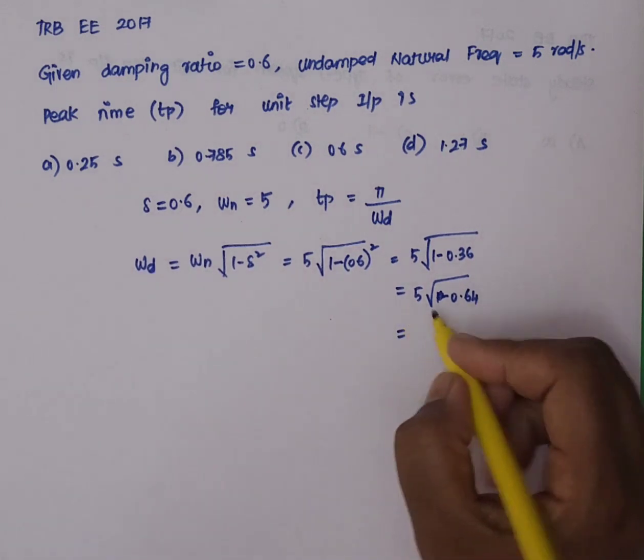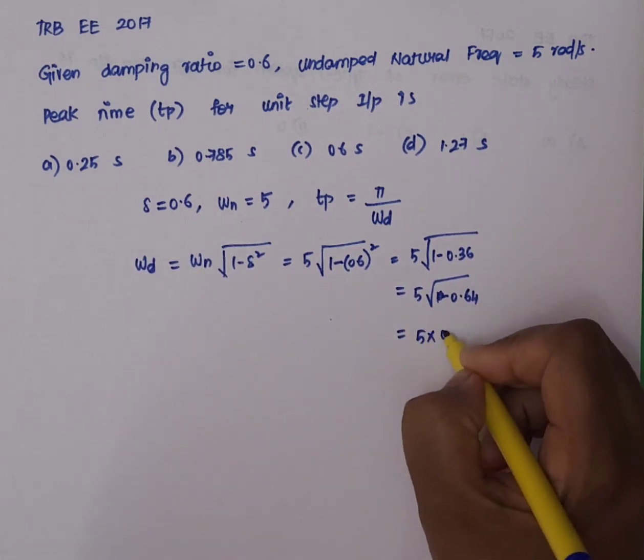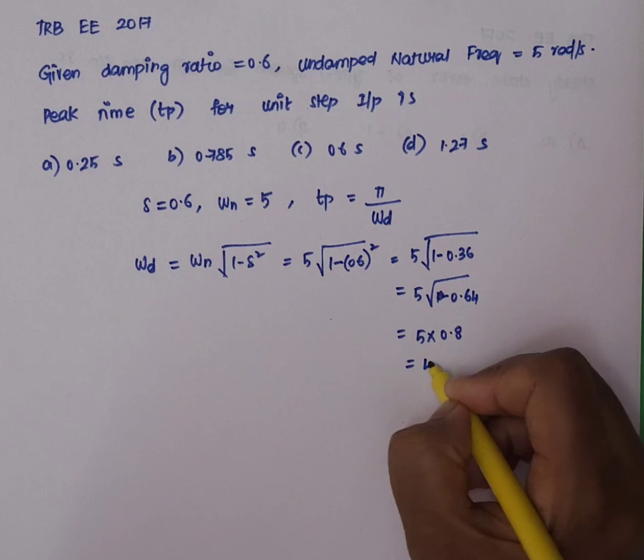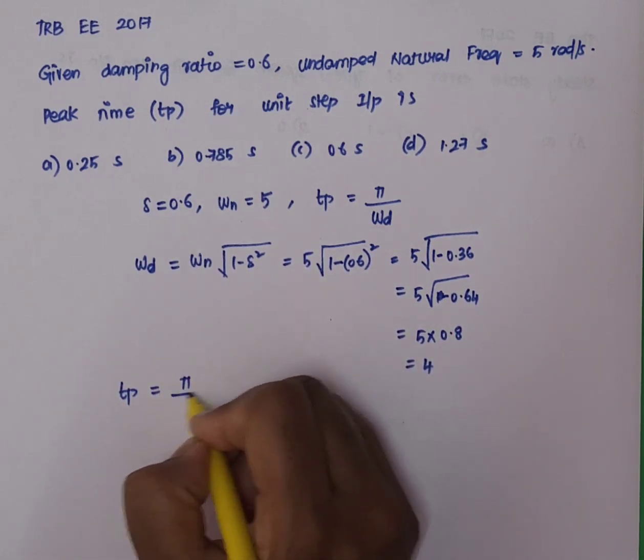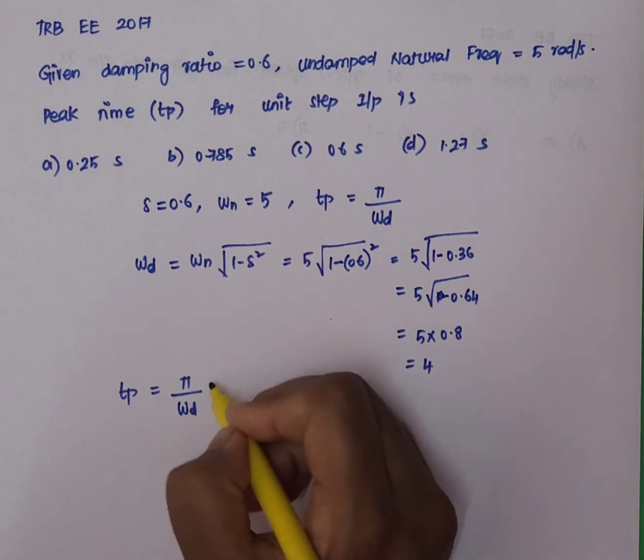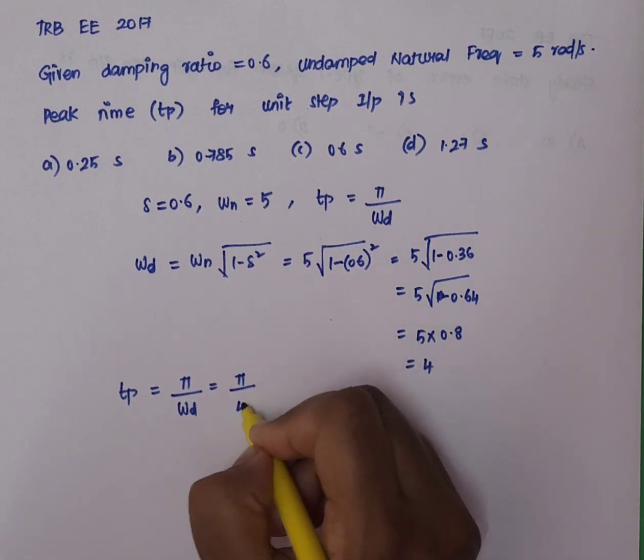If we solve this square root, 5 into 0.8, which is equal to 4. Now, if we do this, TP is equal to π divided by ωd, which is π by 4.